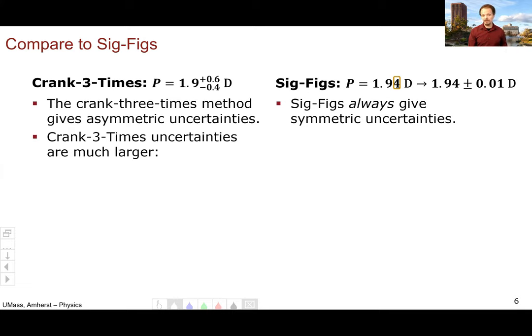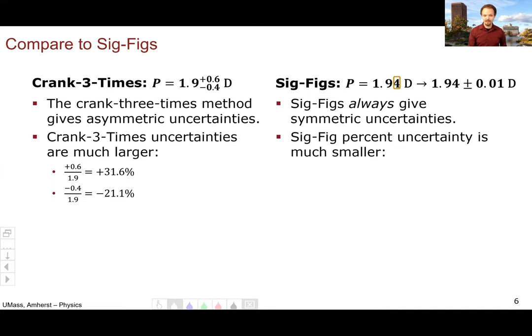The crank three times uncertainties in this case are much larger. The plus uncertainty has a percent uncertainty of 0.06 over 1.9 of 31.6 percent. And the lower uncertainty is below the mean value by 21.1 percent.